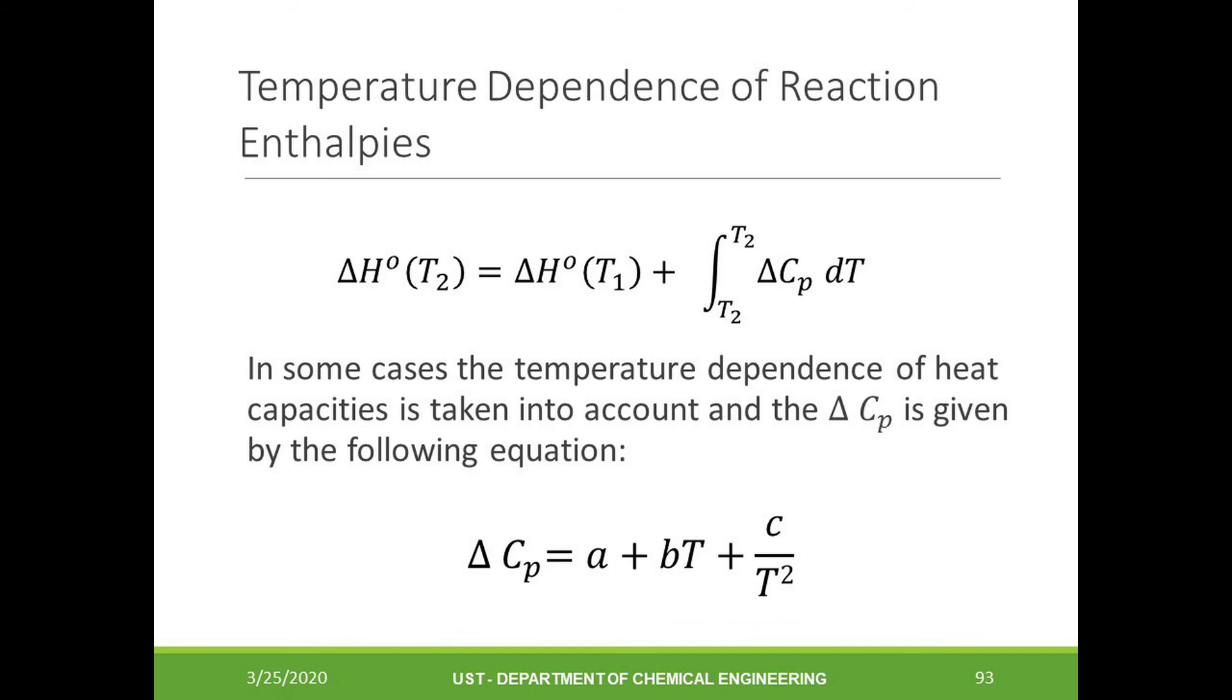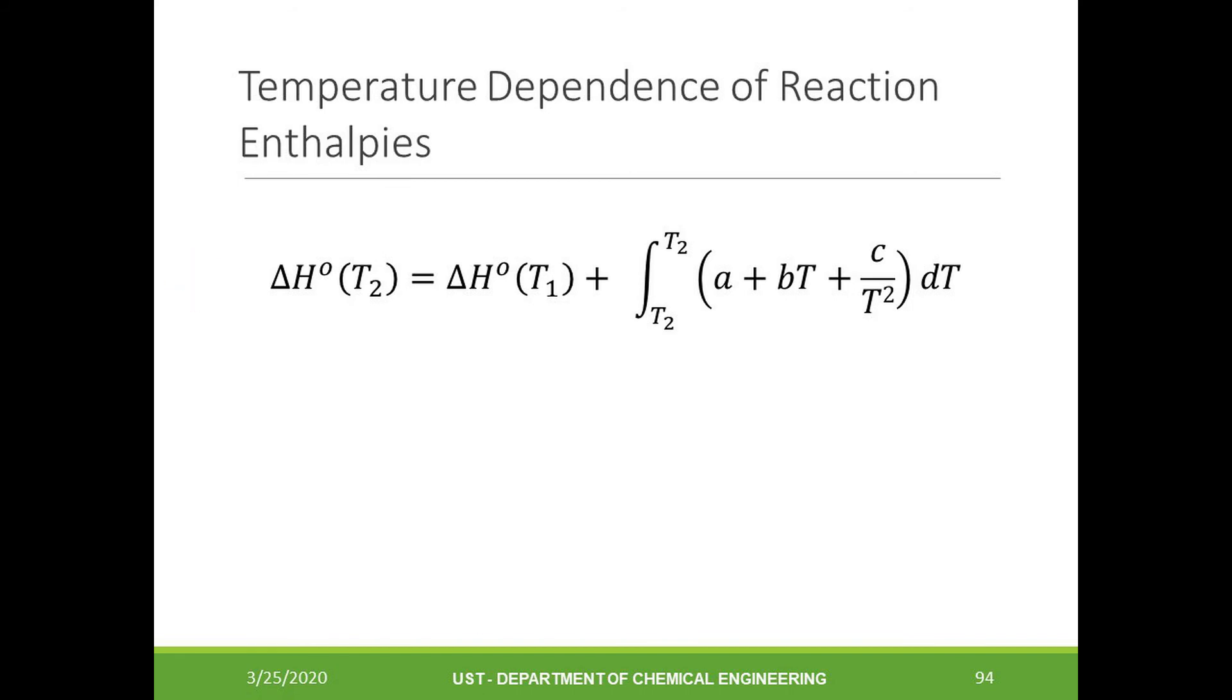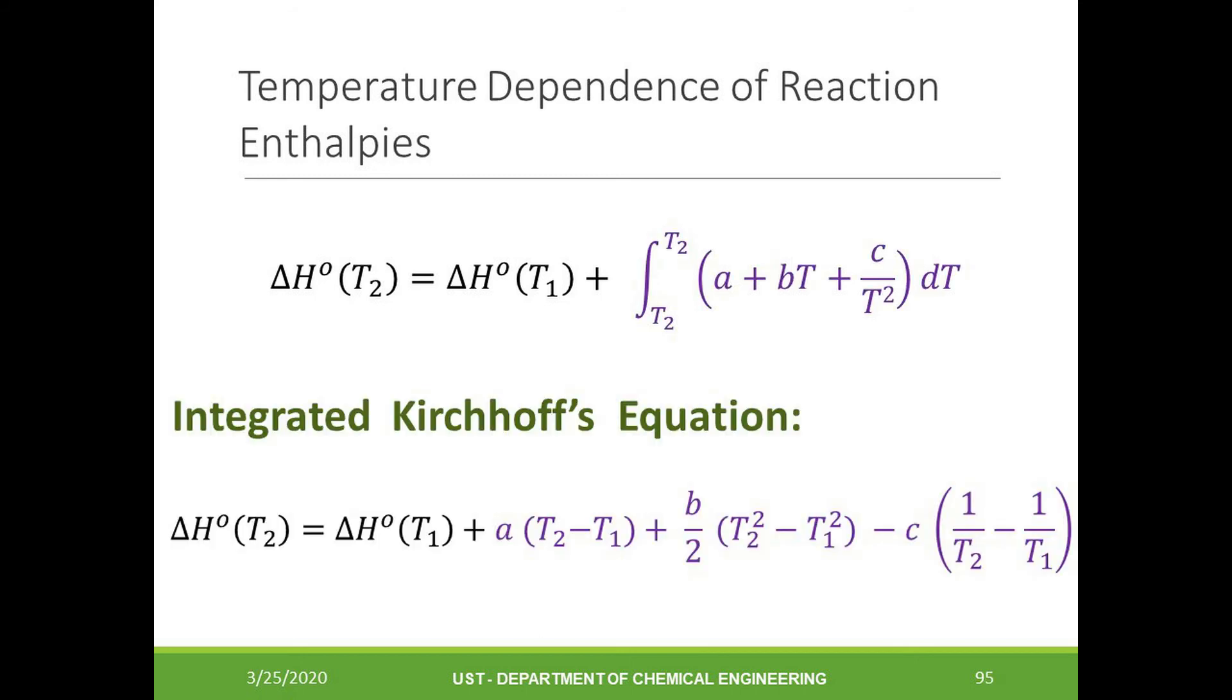In this equation, A, B, and C are independent of temperature. You can find a table showing the temperature variation of the molar heat capacities in your textbook. We can substitute the Cp equation to the Kirchhoff's equation to give the following. Solving the definite integral in the right side of the equation finally leads to the integrated form of the Kirchhoff's equation. This equation can be used with experimentally determined values of A, B, and C.